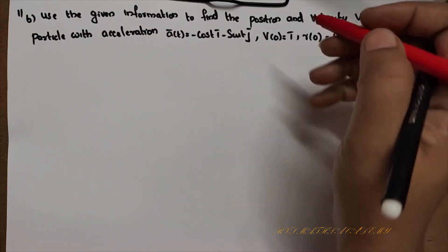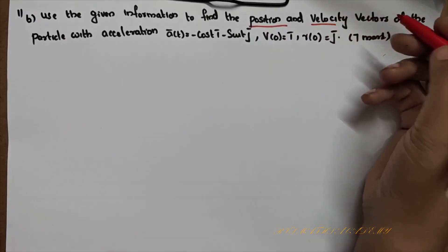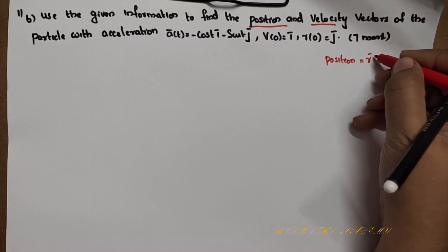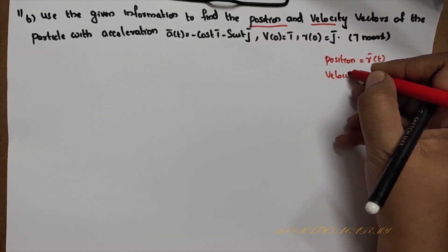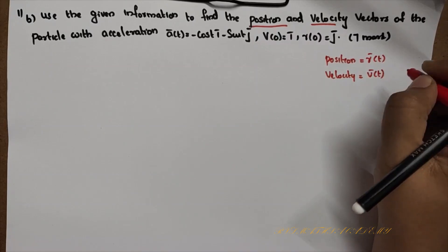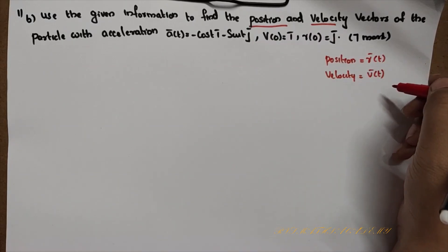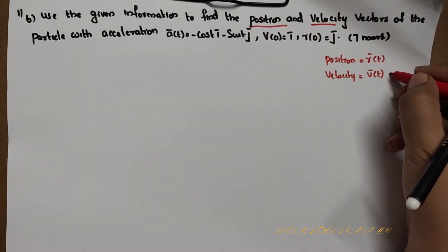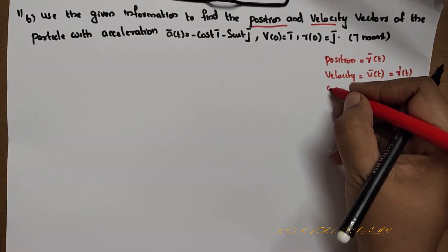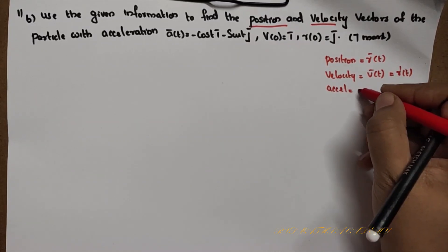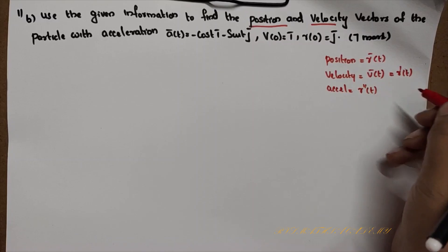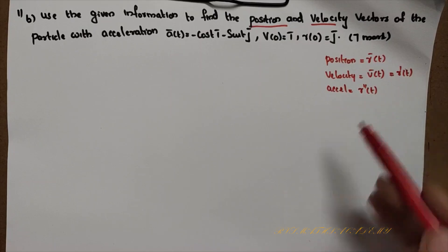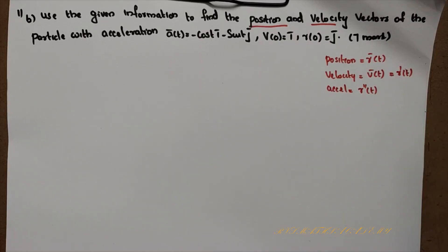We need to find the velocity vector v(t) and position vector r(t). The velocity is found by integrating the acceleration: v(t) = integral of a(t) dt.